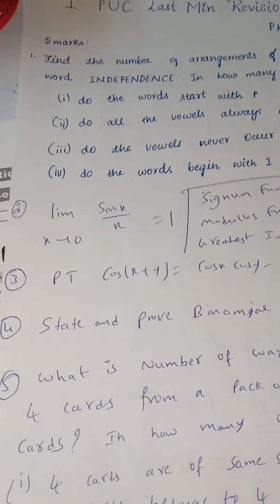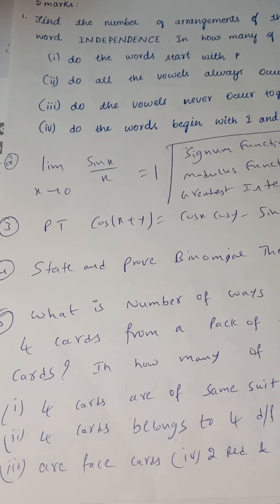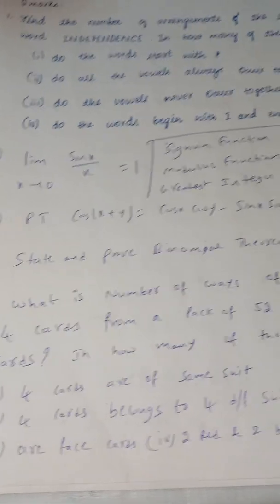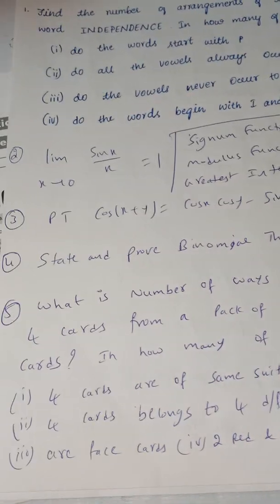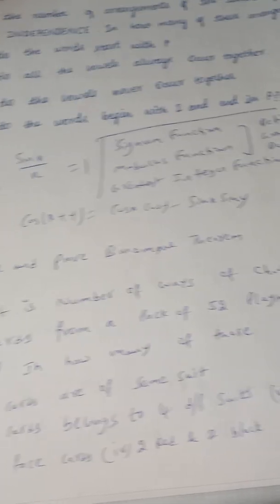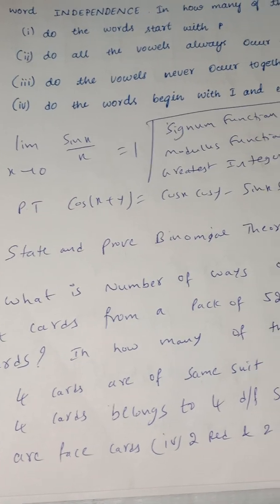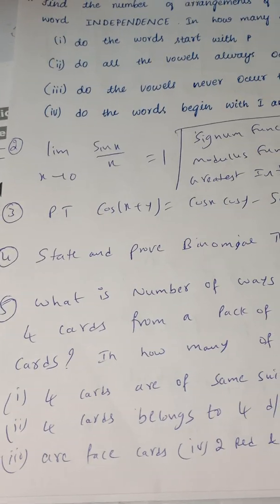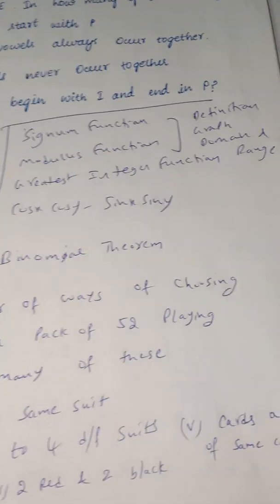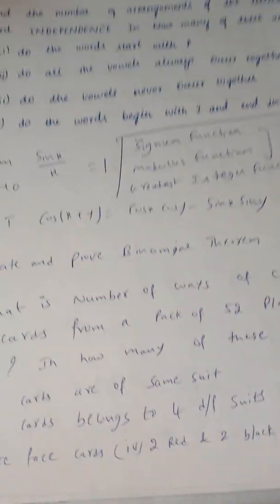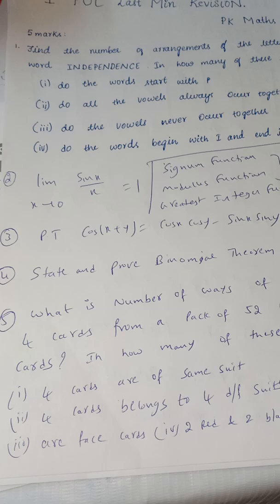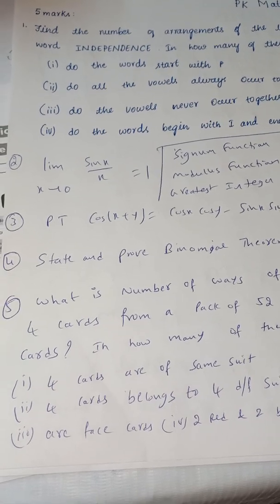Another very important 5-mark question in combinations: find the number of ways of choosing 4 cards from a pack of 52 playing cards. In how many of these: (1) 4 cards are of the same suit; (2) 4 cards belong to 4 different suits; (3) are face cards; (4) 2 red cards and 2 black cards; (5) cards are of the same color. This is an expected question from combinations, particularly in the 1st PUC final exam.